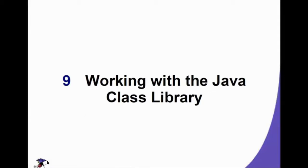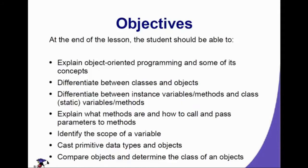Hello everyone. Our topic for today is all about working with the Java Class Library. At the end of this chapter, you will be able to explain object-oriented programming and some of its concepts, differentiate between classes and objects, differentiate between instance variables or methods and class or static variables, explain what methods are and how to call and pass parameters to methods, identify the scope of a variable, cast primitive data types, and compare objects and determine the class of an object.